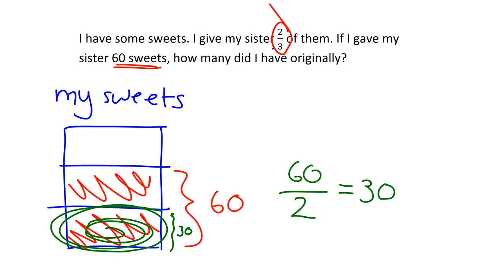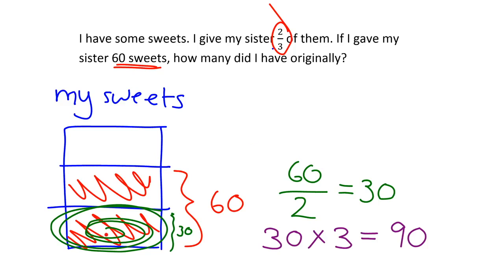But that's still not what I want. What I wanted to know was how many I had originally — I want to get back to my original. My original is made up of 1, 2, 3 of the thirds. So to get back to my original, I take that 30 — the one piece — and multiply it by 3, and I get the answer of 90. You can see that if the two pieces is 60, then one piece is 30, and three pieces will be 30, 60, 90. So the answer is I had 90 sweets originally. Notice what I did: I had to divide by 2 and multiply by 3. By drawing a picture, it was quite easy to see how to do that.